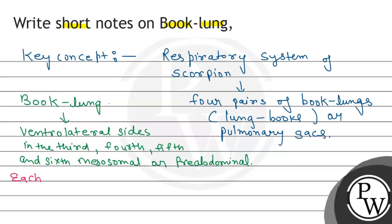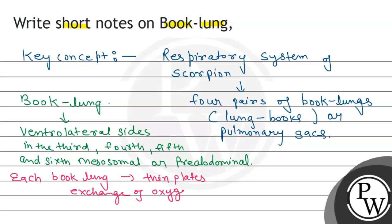Each Book Lung consists of a series of thin plates that are highly vascular — meaning they are richly supplied with blood — and are arranged in relation to each other like the pages of a book. These plates extend into an internal pouch formed by the external skeleton that opens to the exterior by a small slit, and this provides an extensive surface for the exchange of gases, oxygen and carbon dioxide.